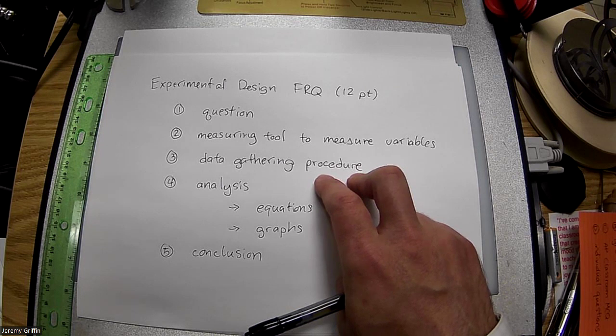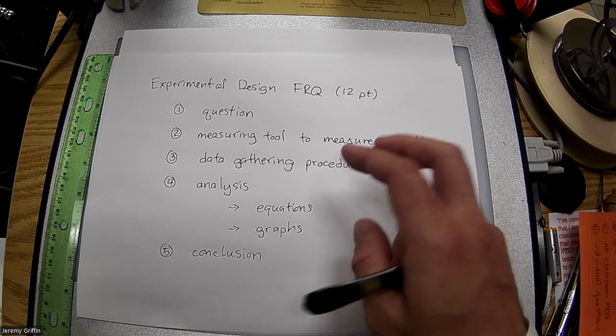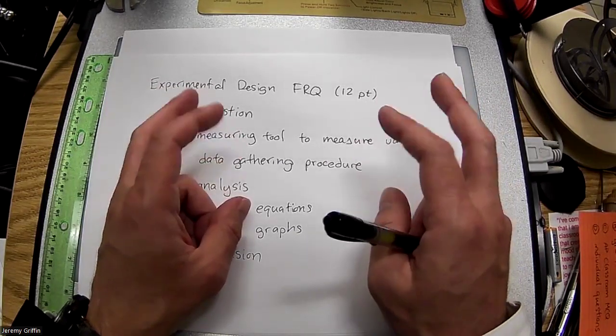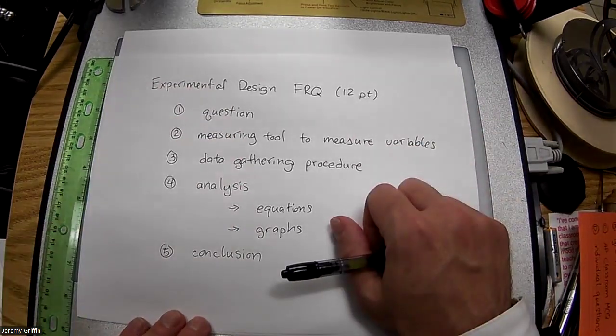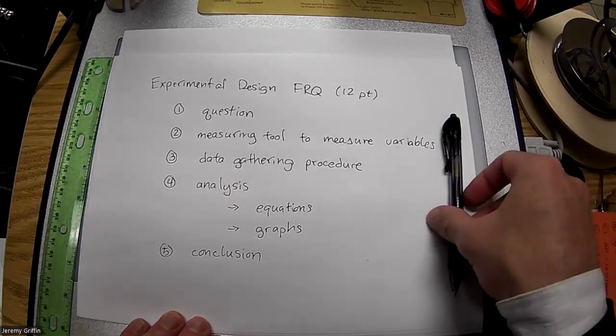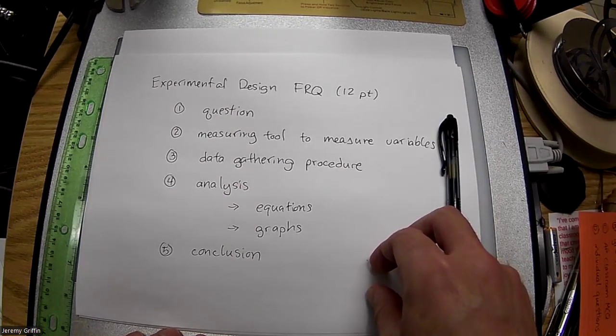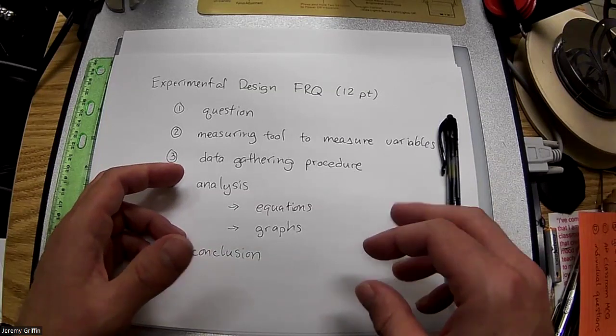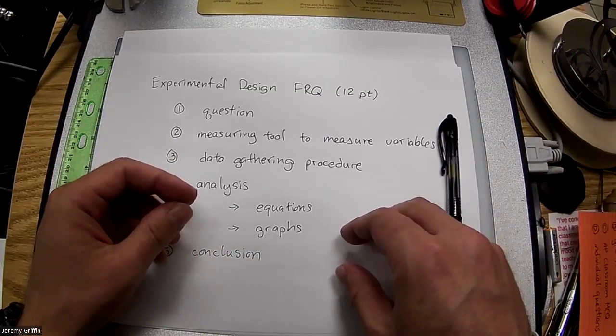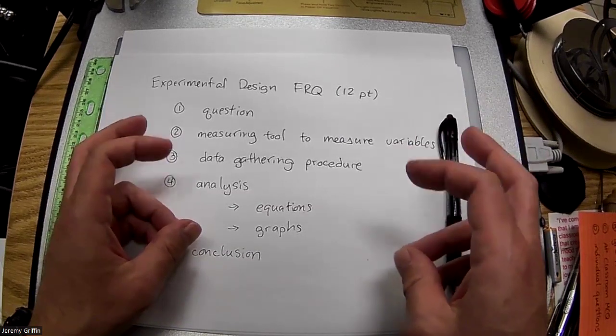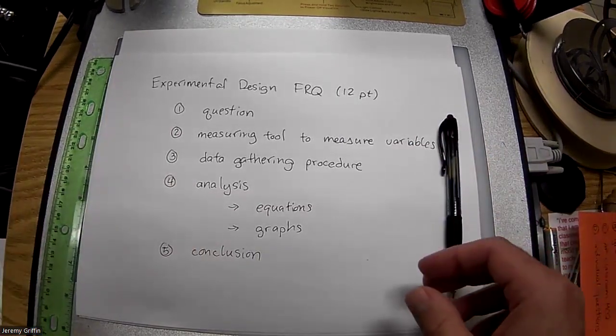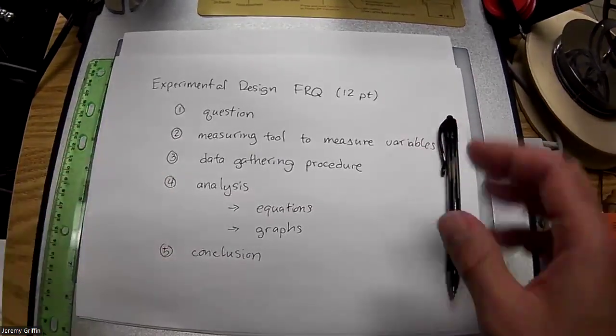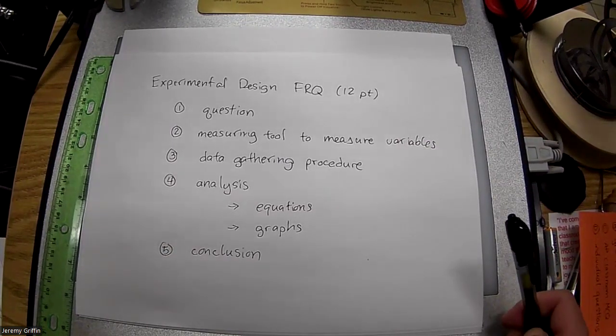I think it would also include the phrase 'to reduce experimental uncertainty,' 'to reduce experimental error,' or 'to reduce random error.' I would pick one of those phrases and throw it in. I remember going to one of these conferences and there was an AP grader. She hated the term 'human error.' I don't know if this is a widespread thing, but maybe try to avoid that phrase just in case. Avoid the phrase 'human error,' but 'experimental error' is fine, 'random error' is fine.